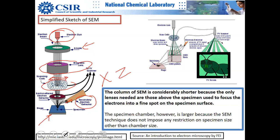In TEM, the image has contrast contributions from three sources: Z contrast (which is very strong), thickness, and crystallinity contrast. None of these three contrasts exist in secondary electron SEM imaging. The only origin of secondary electron contrast is topography — that is the only contributing factor, which also makes things simpler.